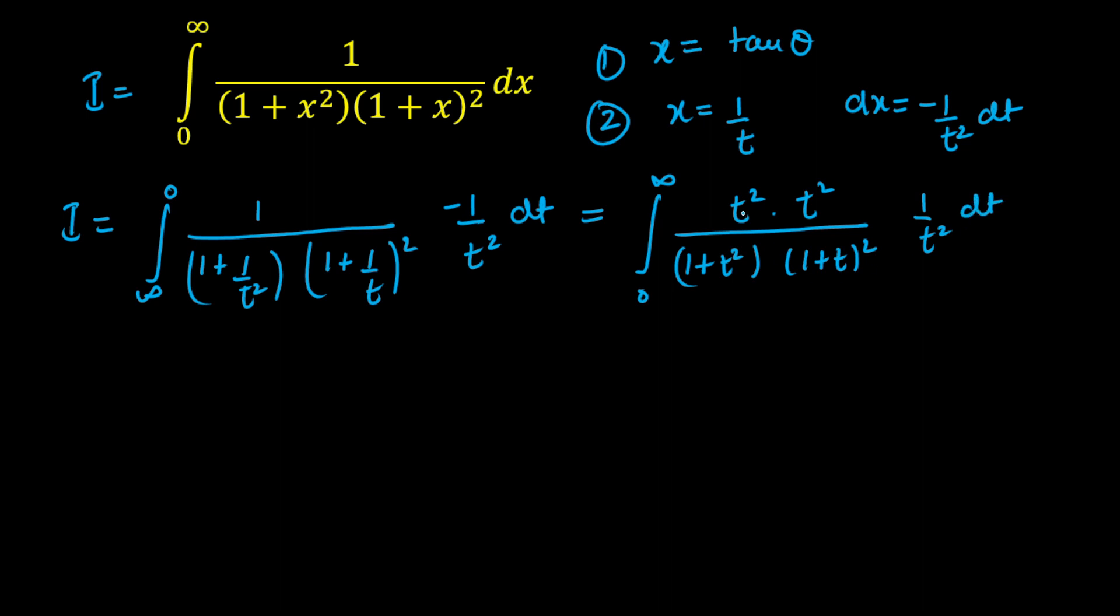So here one of the t square will cancel out and we will get this as t square upon 1 plus t square into 1 plus t whole square. So again I am writing this as since t is a dummy variable I can write this as x. There is no problem again. So I am going to write this as x again.